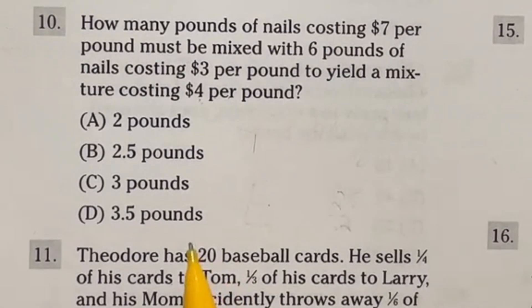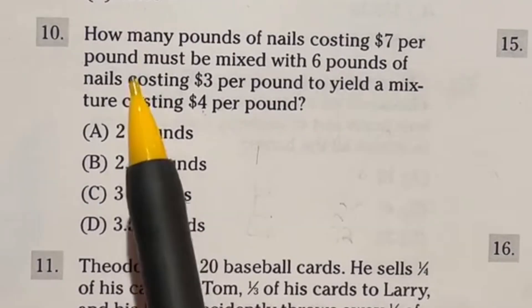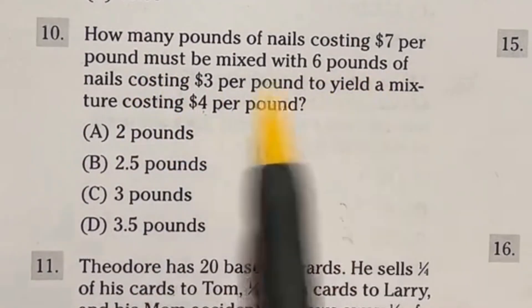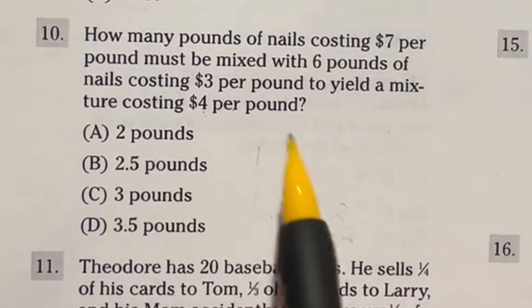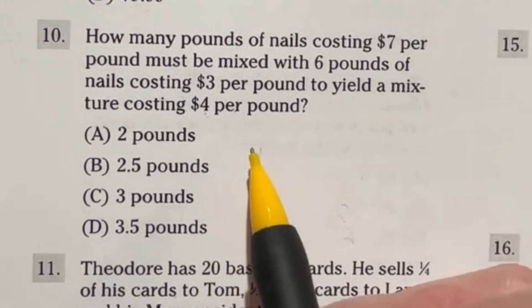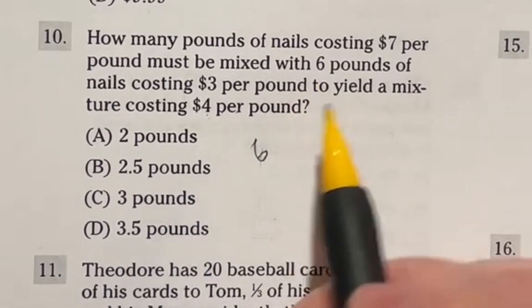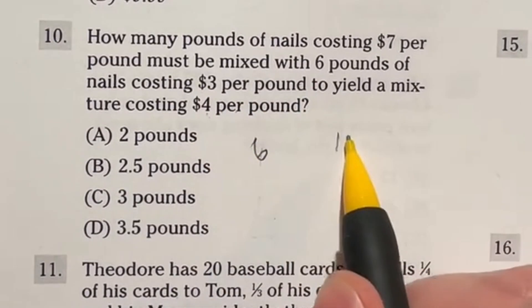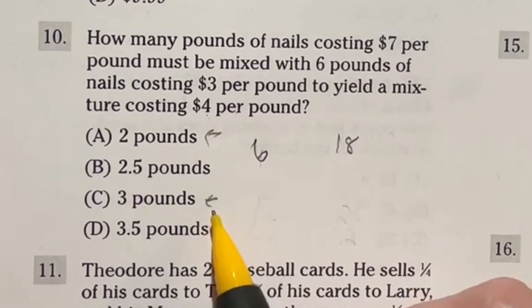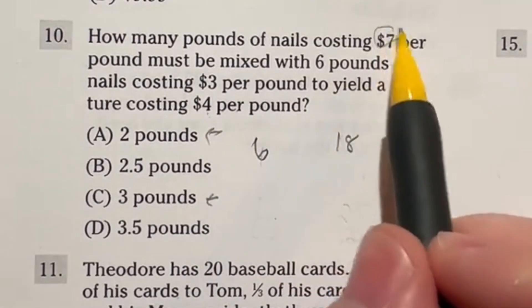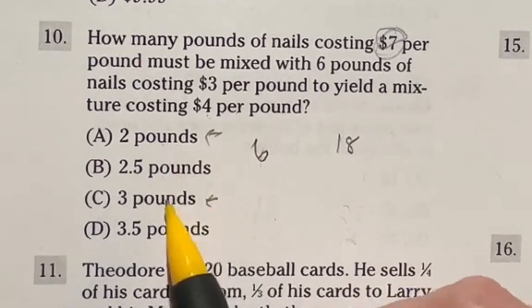Let's go ahead and take a look at number 10. We're going to do this one by trying to use the answer they provided us with to give us like a little bit of headway for some guess and check. It says how many pounds of nails costing $7 per pound must be mixed with six pounds of nails costing $3 per pound to yield a mixture costing $4 per pound. So here's the, we're starting with six pounds. And currently that's at $3 per pound. So that means that six times at three, we're currently at $18. Now, what I want to see is right here, I see two and three. So what I want to do is go ahead and try to add two pounds of the $7 mixture and see if that gives us an evenly divisible by four a number to give us one of these two answers.